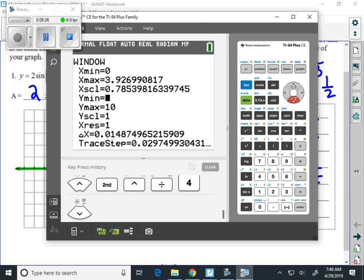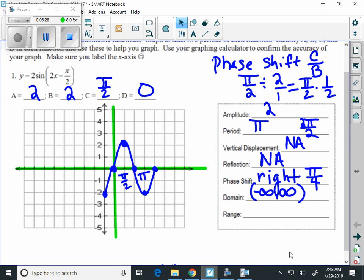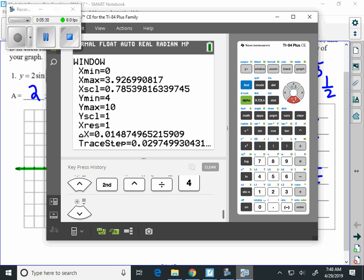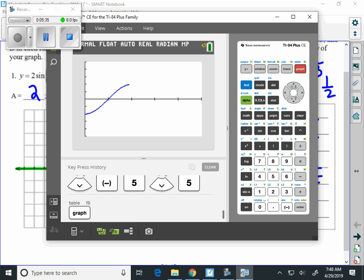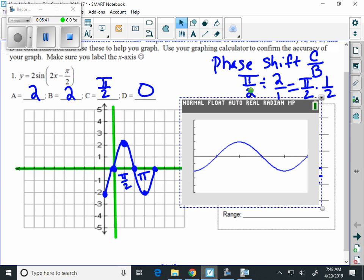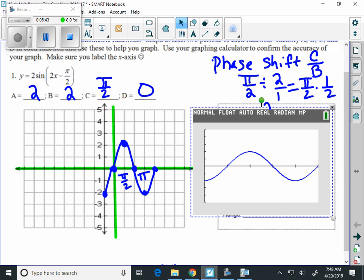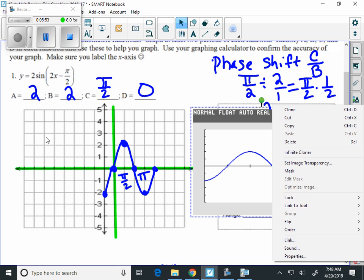And then our y min is going to be negative 5 on our graph and then we have positive 5. And as we compare here, I'll slide this in for a minute to compare, is that the same graph? And even though our graph on the calculator is a little bit more spread out, yes it is the same graph. So we checked it on our calculator.